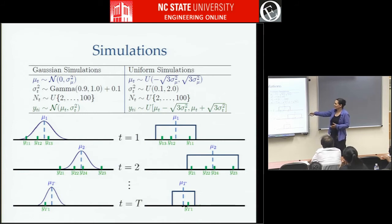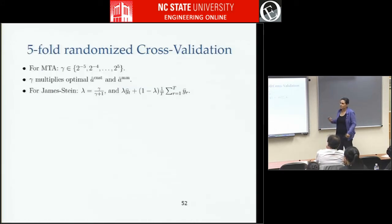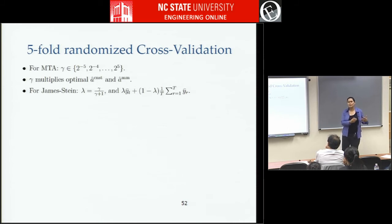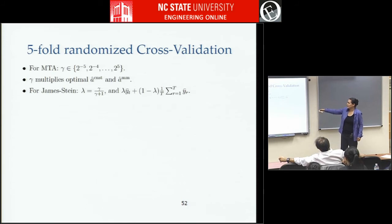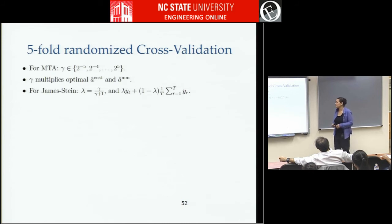We have a Gaussian simulation where everything is drawn Gaussian with two to one hundred samples per task, and a uniform simulation where everything is drawn from uniform distributions also with two to one hundred samples per task. For cross-validation we use five-fold. We can also cross-validate the James-Stein formula, which effectively makes your new estimate a convex combination of the sample averages and the pooled mean — we call that James-Stein CV. That's likely the first thing you'd try if you wanted to bring tasks together: just regularize towards the pooled mean.